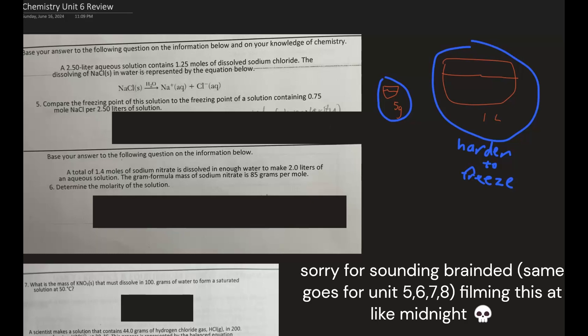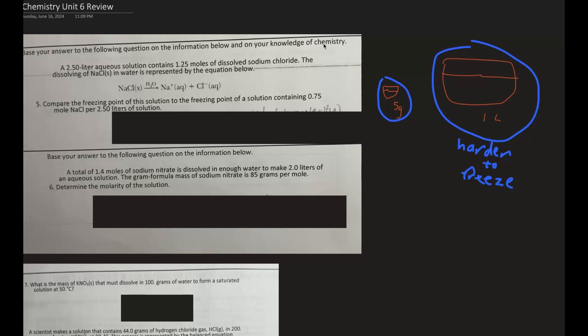So the first one says, a 2.5 liter aqueous solution contains 1.25 moles of dissolved sodium chloride, and the equation is below. Compare the freezing point of this solution to the freezing point of a solution that contains 0.75 moles of sodium chloride per 2.5 liters of solution. So it's the same total amount of solution, except the only thing that's changing is the number of moles, and so the concentration has changed.